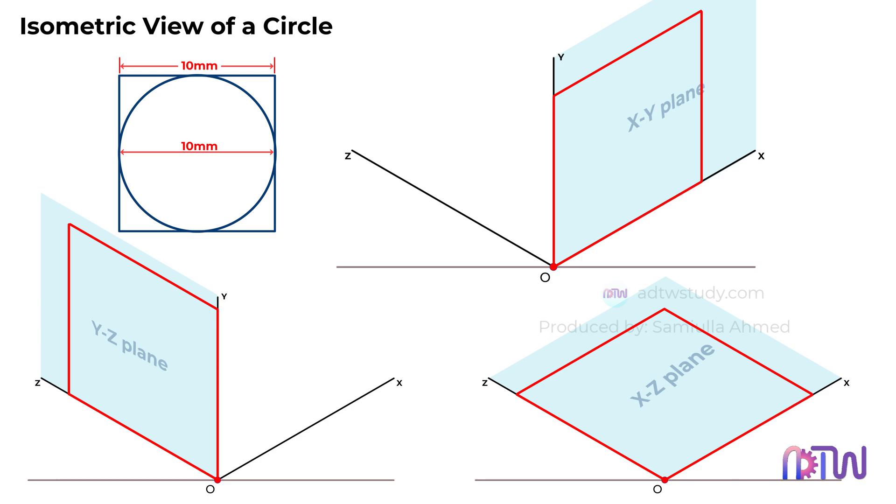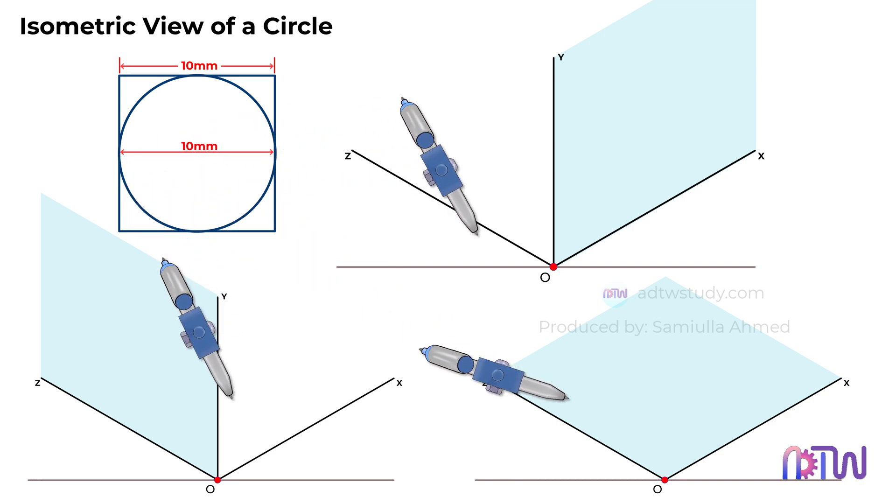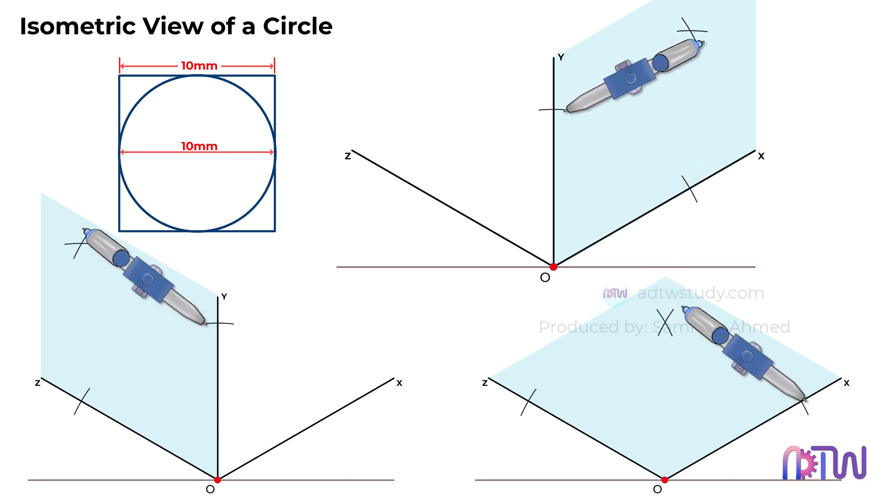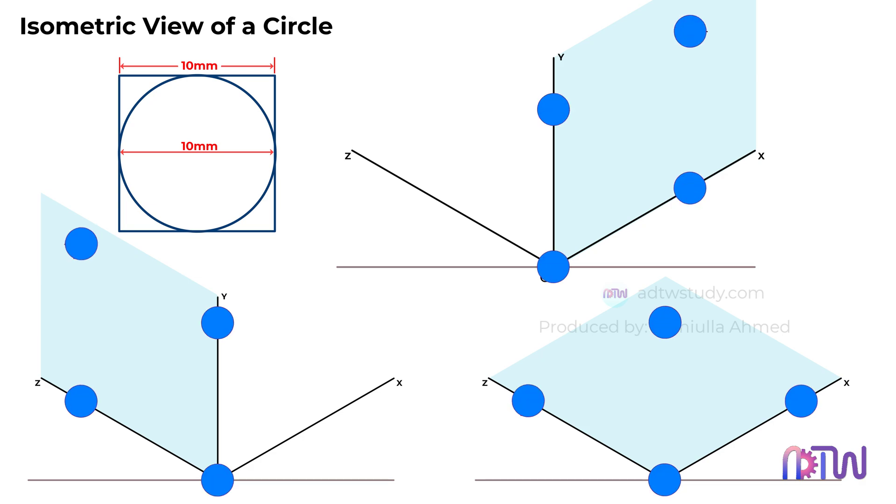You can draw it using a compass or drafter, depending on what is available at hand. Take a compass, adjust it to the radius of the circle, and draw an arc as shown. After this, join these points with light lines to get the outer square.